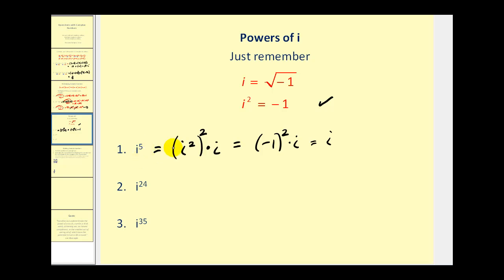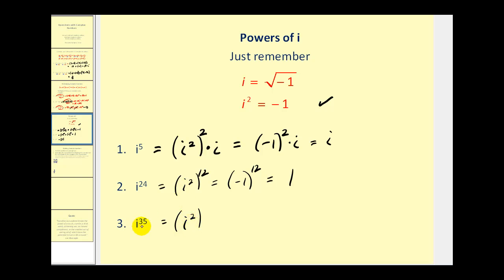If i is raised to an odd power, the result will always be i or negative i. For i to the twenty-fourth power: how many two's are in twenty-four? There are twelve two's in twenty-four, same as i squared to the twelfth power. Replacing i squared with negative one, negative one to the twelfth power is positive one. So if we have i raised to an even power, it will always be either one or negative one. For i to the thirty-fifth: raising to the seventeenth power gives i to the thirty-fourth with an extra factor of i, so negative one to the seventeenth times i. A negative number raised to an odd power is always negative, so the result is negative i.